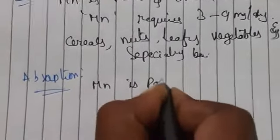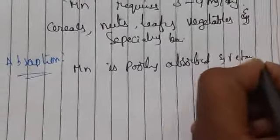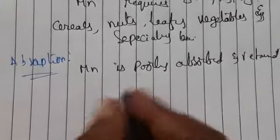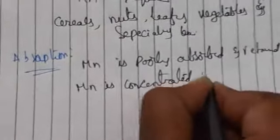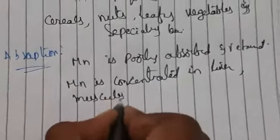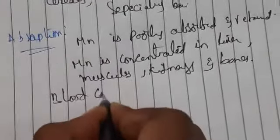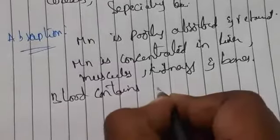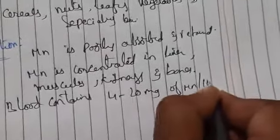Manganese is purely absorbed and retained. It is mainly concentrated in the liver, muscles, kidneys, and bones. Blood contains generally 4 to 20 micrograms of manganese per 100 ml.